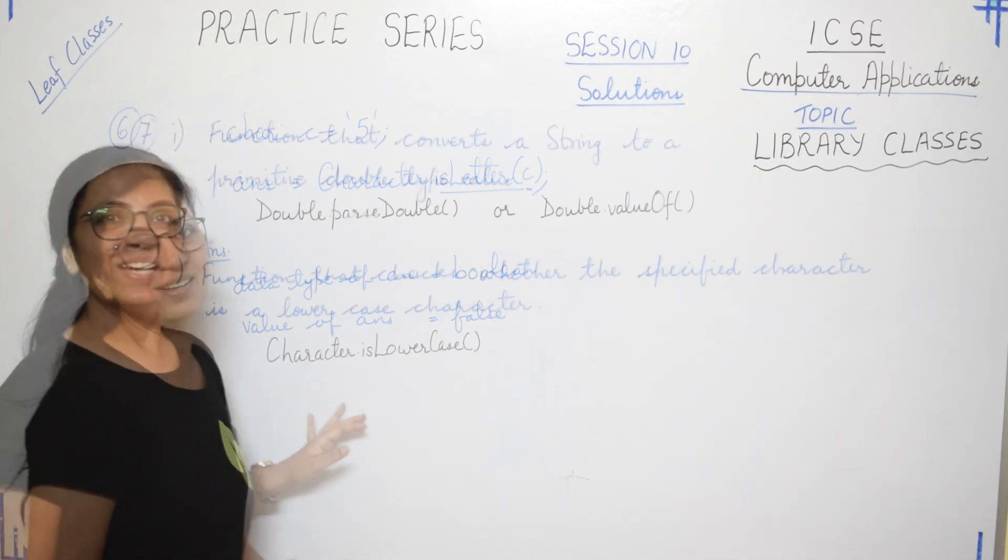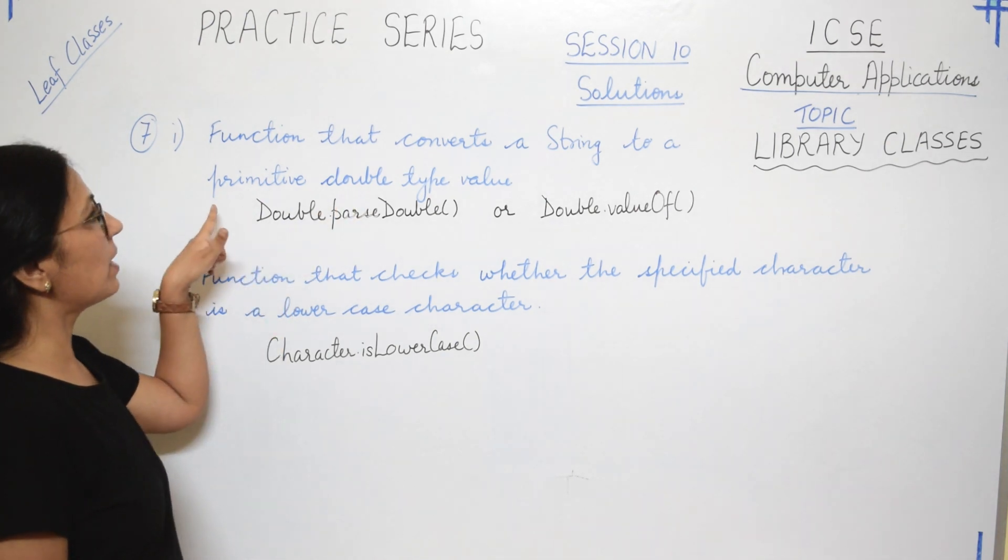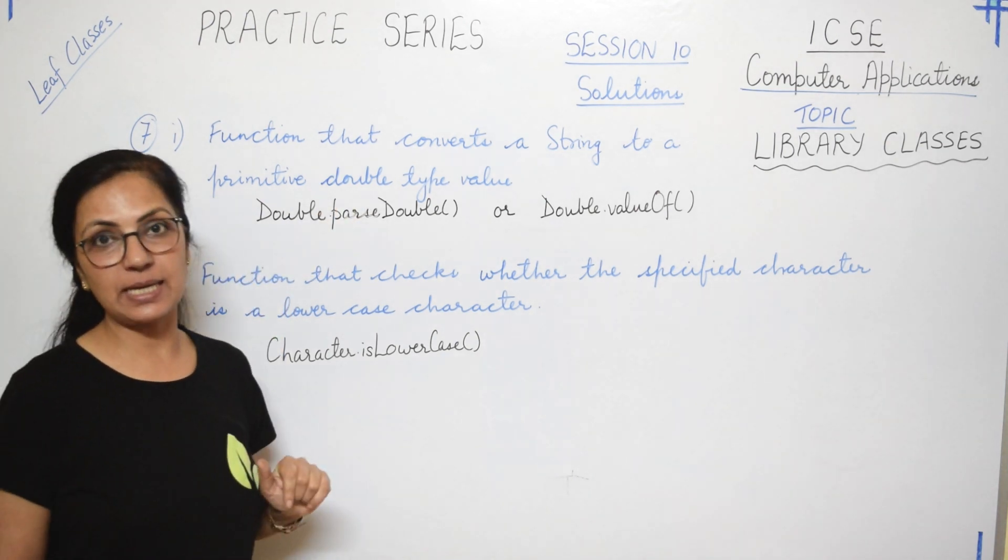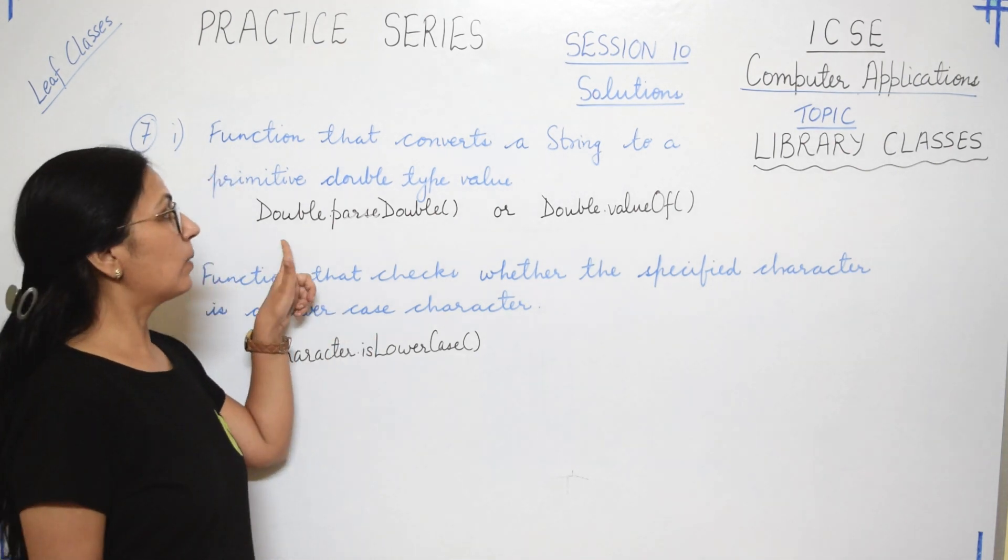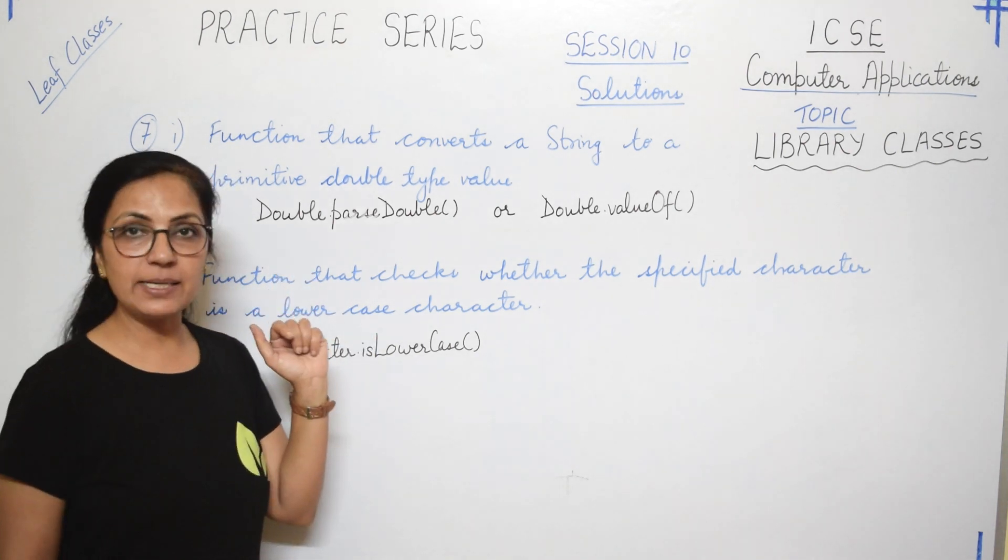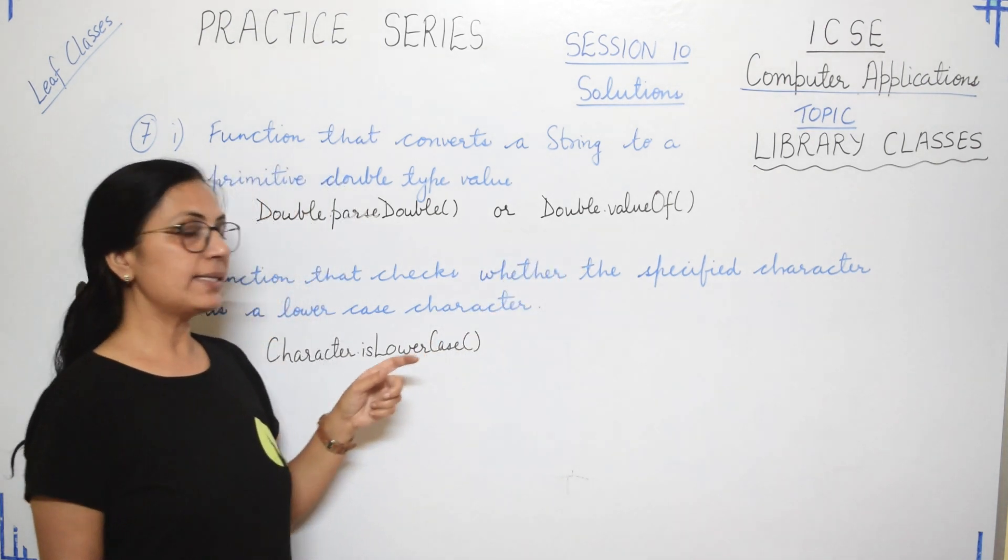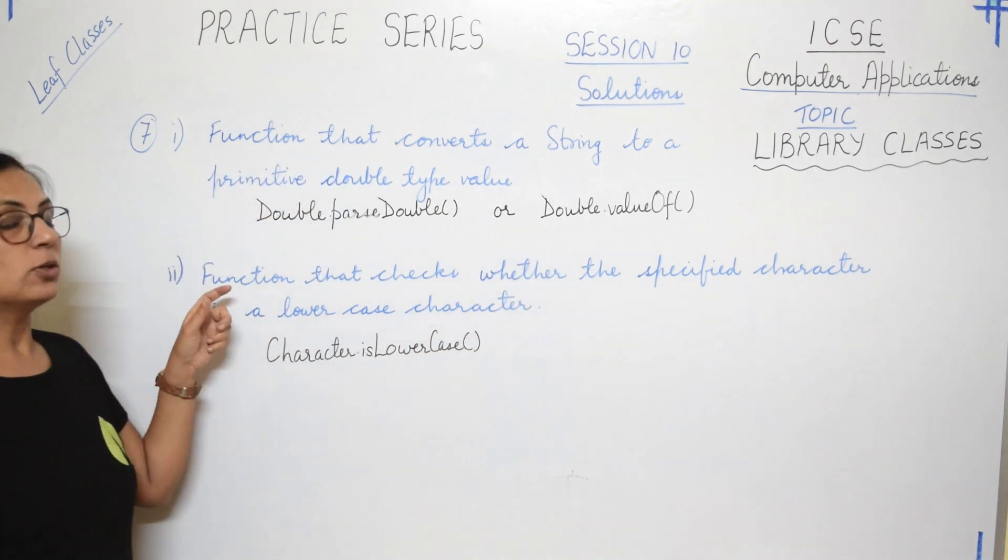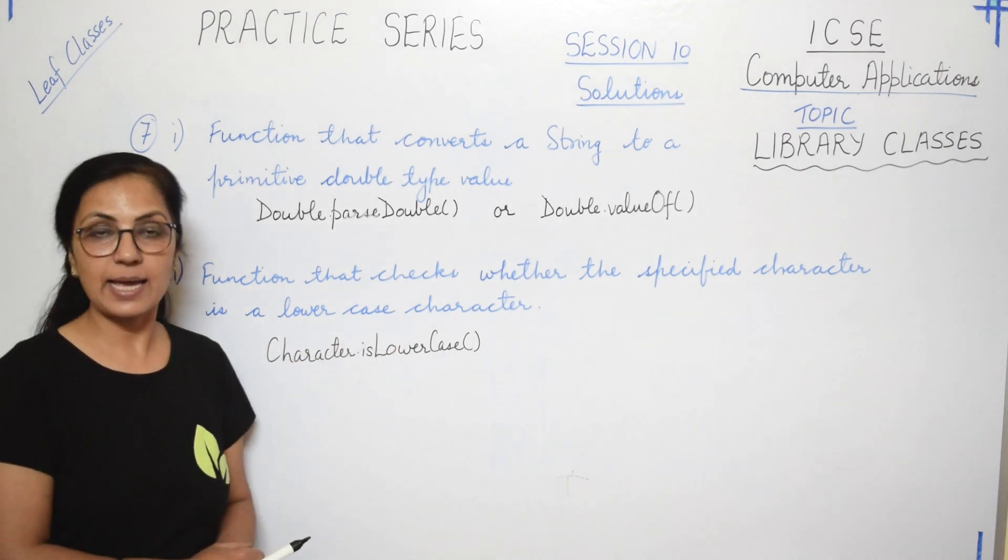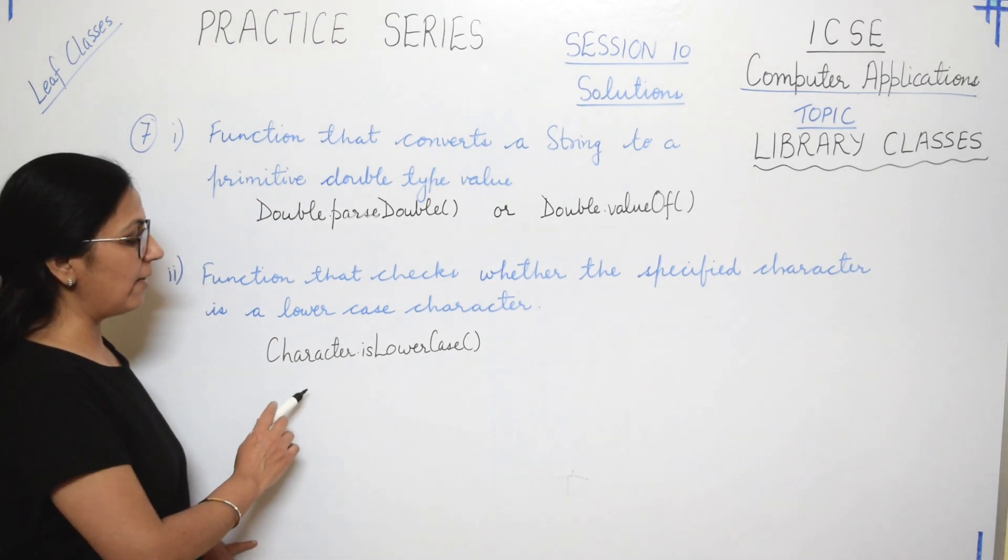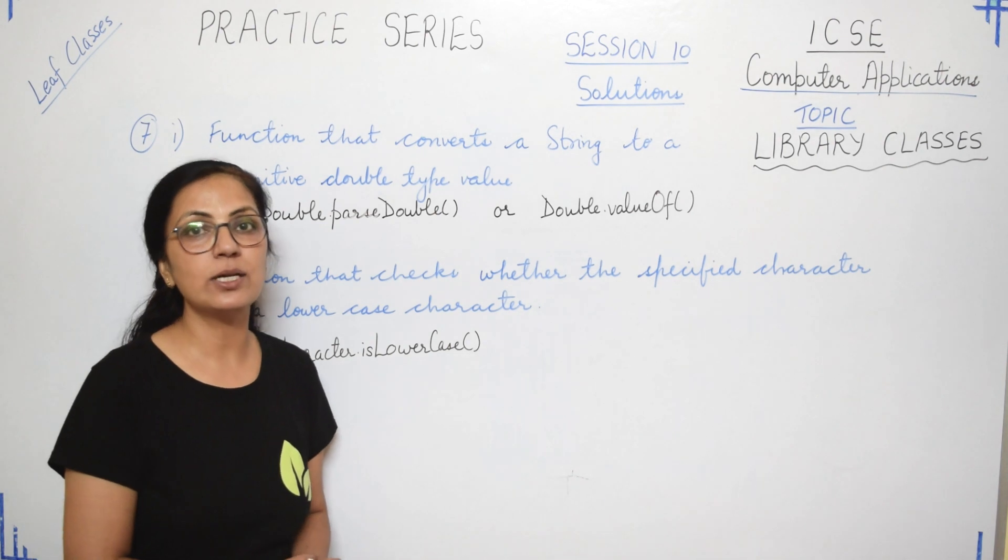Question number seven says: state the function name that converts a string to a primitive data type value. So for this we have two functions - you can use either Double.parseDouble function or Double.valueOf function. And the second part of this is: tell the function name that checks whether the specified character is a lowercase character. So for this we have the function Character.isLowerCase - this function checks whether the given character is lowercase character or not.